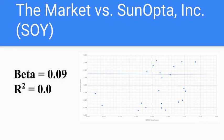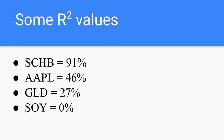And so the higher the R squared value is, the closer it is to one or 100%, the more useful the beta is. And I'll show you some R squared values for some of the stocks we talked about today. 91% for that Dow Jones Market Index. 46% for Apple, so that means that only 46% of Apple's performance can be attributed to the market. Gold was 27%, and soy was zero, as we've already discussed.